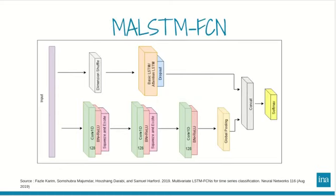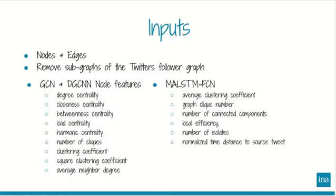When we talk about time series here, we don't talk about the number of tweets per minute kind of time series, but multivariate time series using different node features. The proposed model comprises a full convolutional block and an LSTM block. The full convolutional block contains three temporal convolutional blocks used as a feature extractor. As input, we have a list of nodes and edges. We remove the sub-graphs of the Twitter followers graph, meaning we have just the retweet action for one tweet as a graph. For GSN and DGCNN we use node features, and for the time series we use graph features.